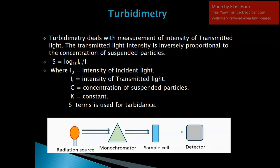The main parts of the turbidimetry instrument are the radiation source, monochromator, sample cell, and detector, all placed in a straight line at 180 degrees to each other. The radiation source emits radiation which passes through the monochromator, converting polychromatic light into monochromatic light. The monochromatic light then passes through the sample cell, where some radiation is absorbed and some is transmitted towards the detector.